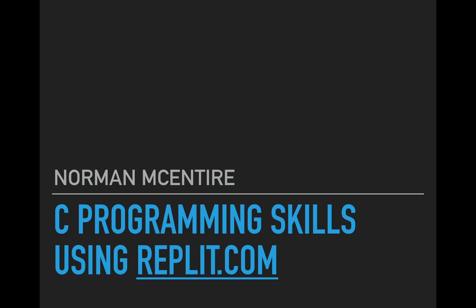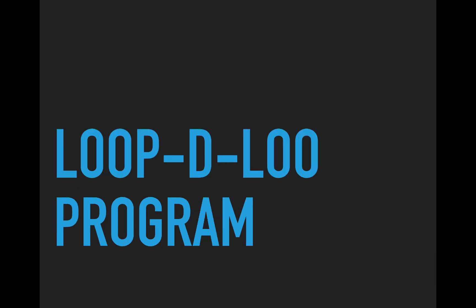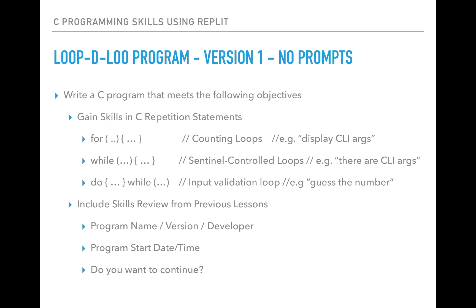Welcome back to C Programming Skills using Replit. I'm Norman McIntyre. Let's get started. We're going to focus on the Loop-de-Loop program. The Loop-de-Loop program version 1 will have several versions. The first version won't have any prompts, it will just run straight. We'll go write a C program that meets the following objectives. We'll gain skills in what's called C Repetition Statements, sometimes called looping.